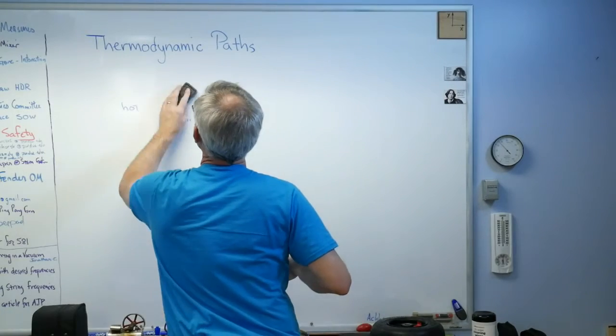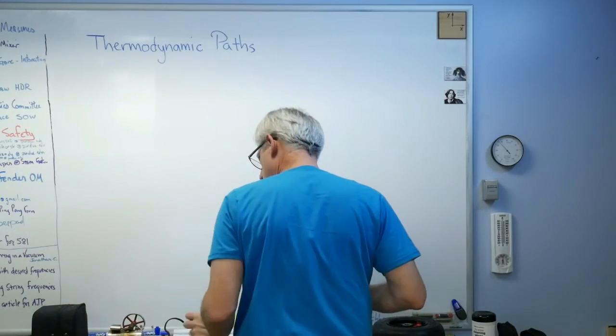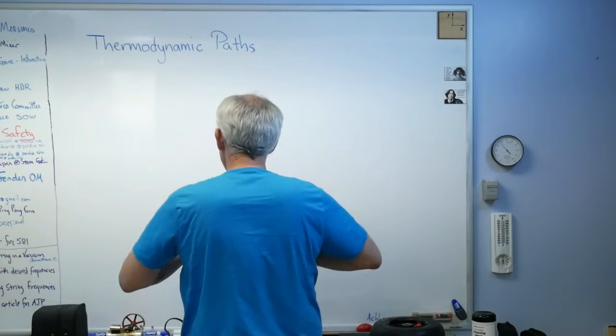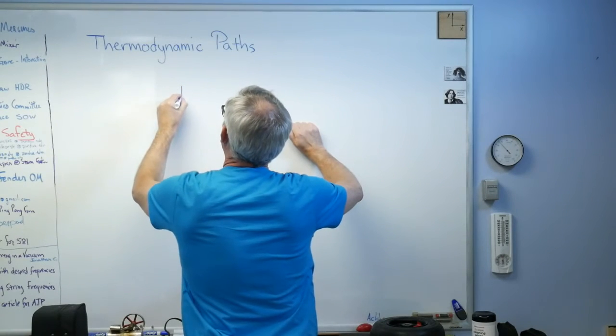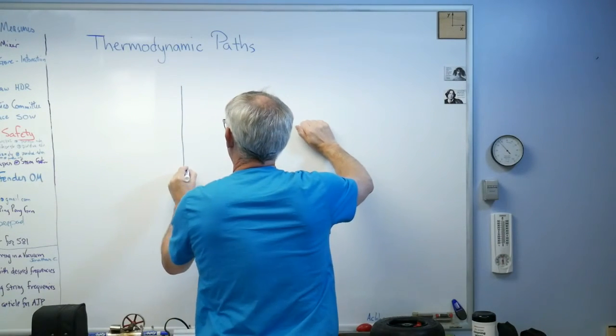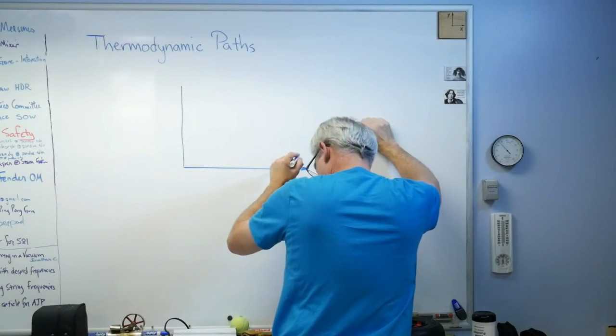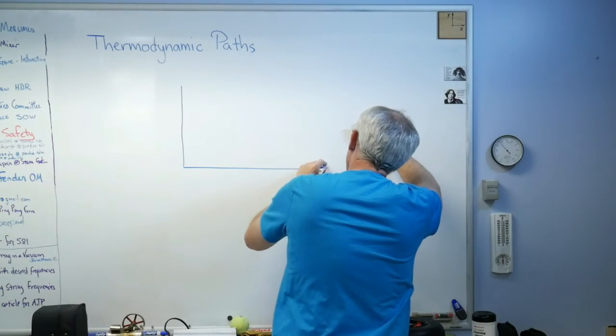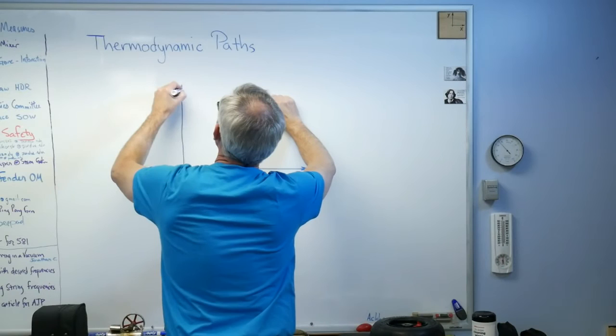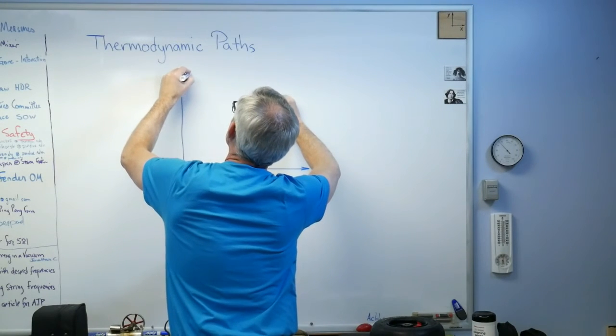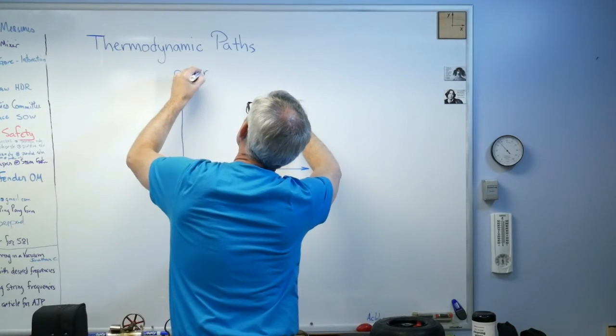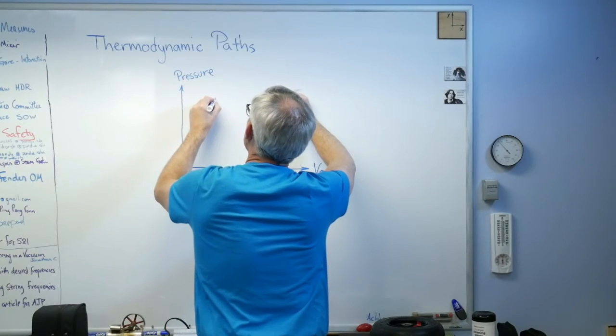Let's try this: what if I had, let's see, volume on this axis, kind of like I did before, and pressure on this axis.